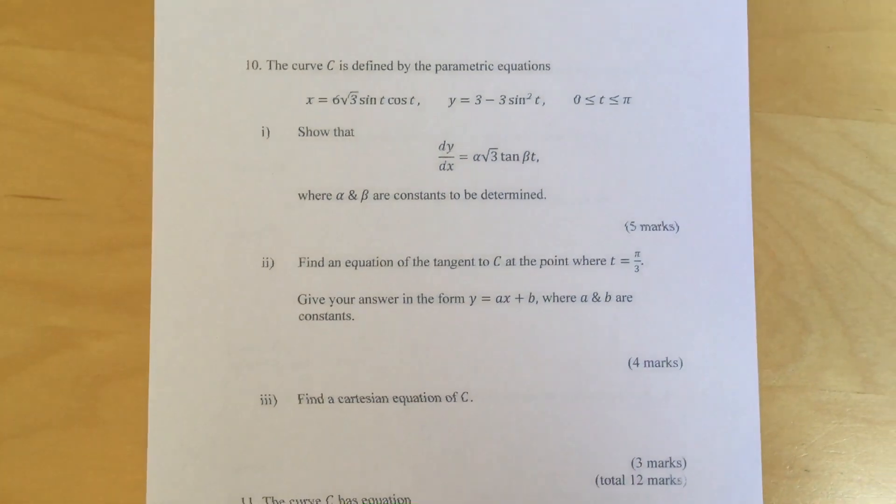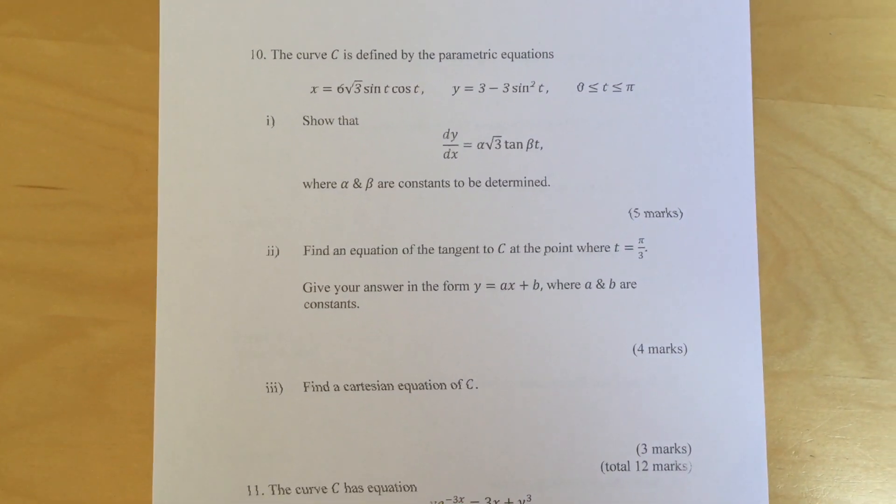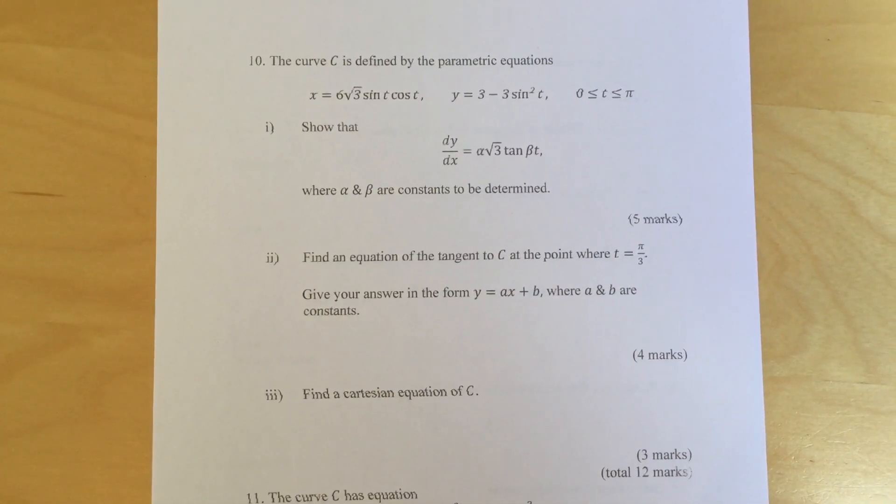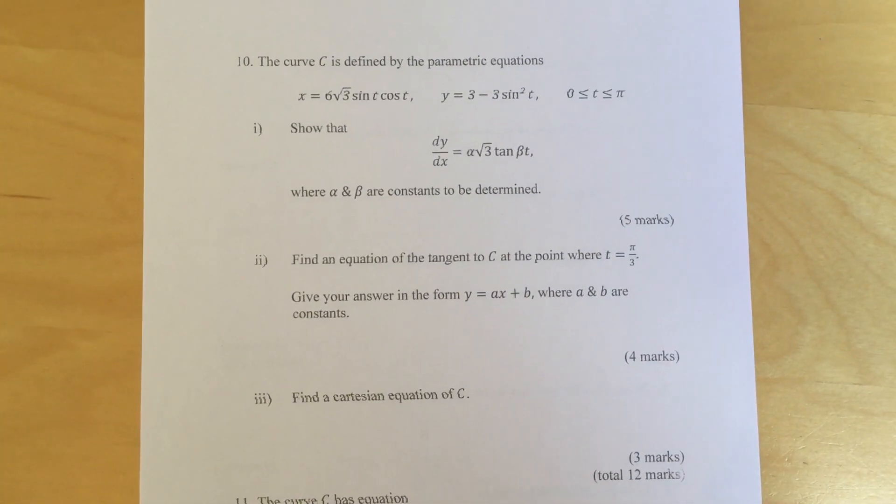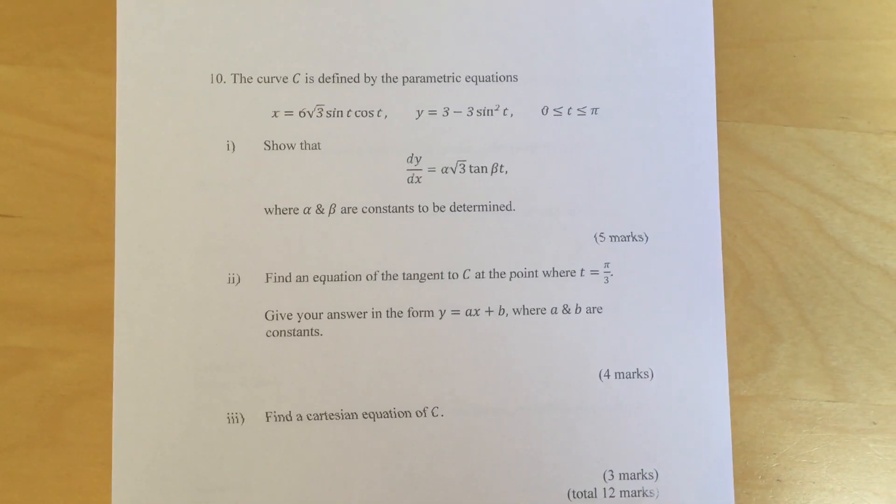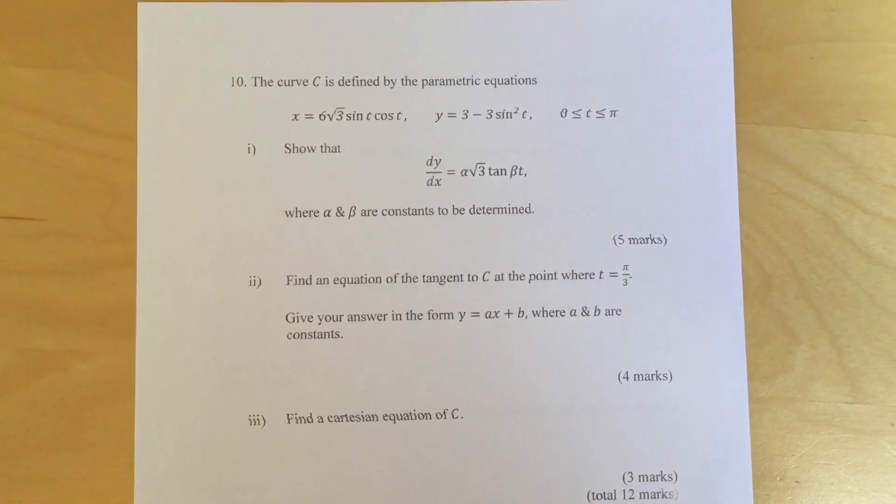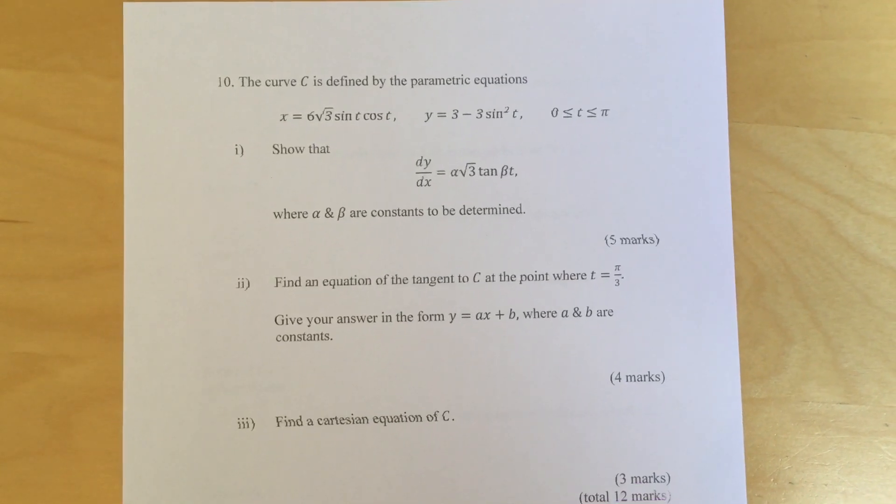Question 10: The curve c is defined by the parametric equations x equals 6 root 3 sin t cos t, and y equals 3 minus 3 sin squared t for t between 0 and pi inclusive.